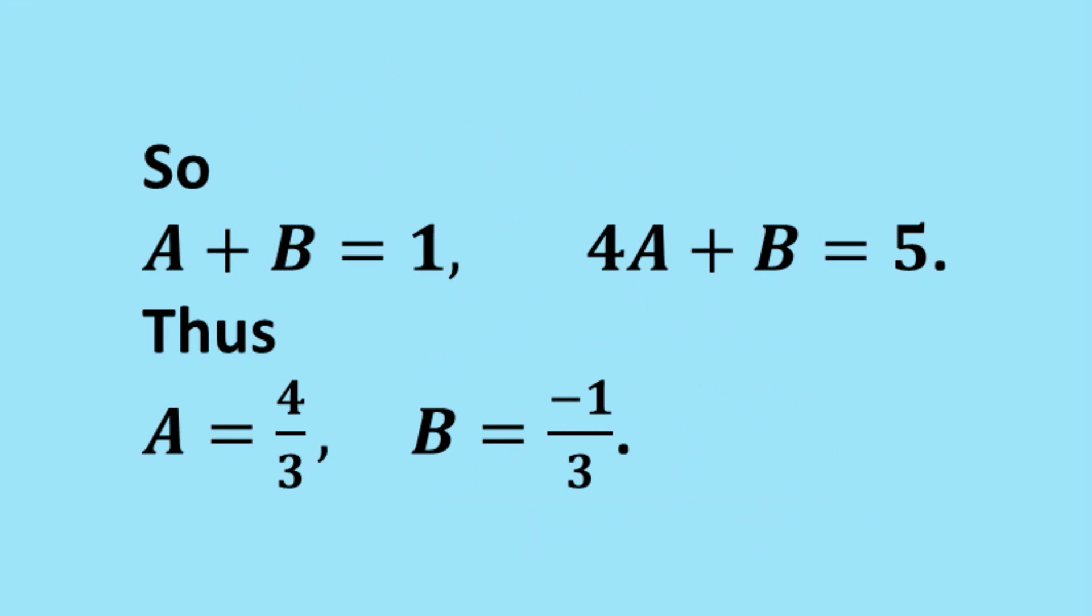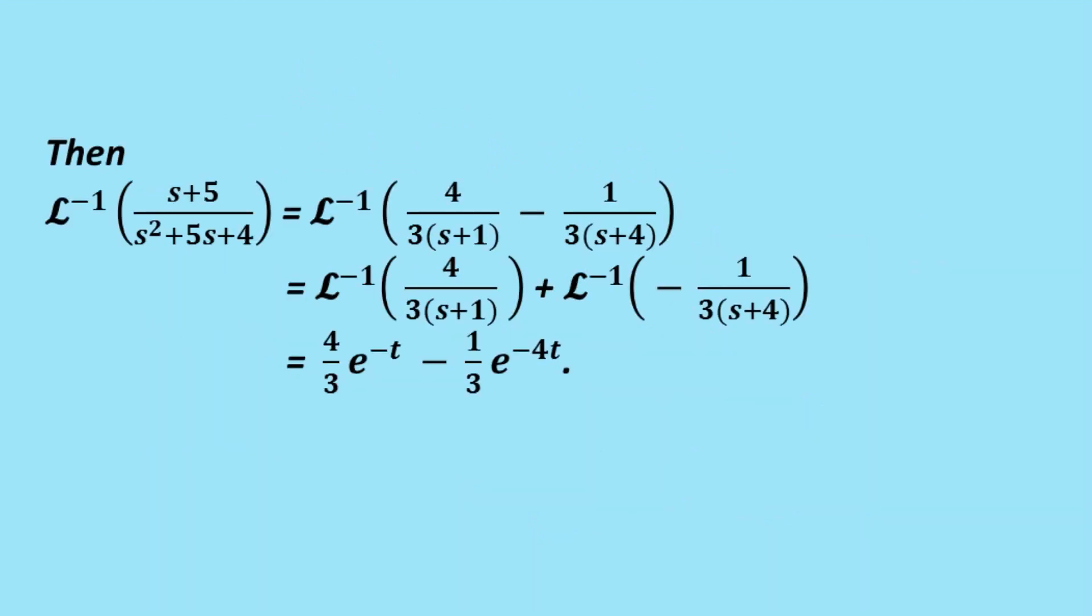So now to return to the problem, this would be a solution, the inverse Laplace transform of the original fraction. We can now say it equals the inverse Laplace transform of what we've worked out from our partial fractions work. And we can split that up into the two inverse Laplace transforms. And now this one here, the 4 thirds can come out the front, it's just a constant. And we now look up the tables to see that the inverse Laplace transform of 1 on s plus 1 is e to the minus t. And with this one here, we take out negative 1 third. It's a constant, and the inverse Laplace transform of 1 on s plus 4 is e to the negative 4t. And that gives us our solution.